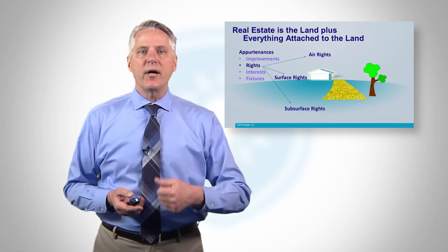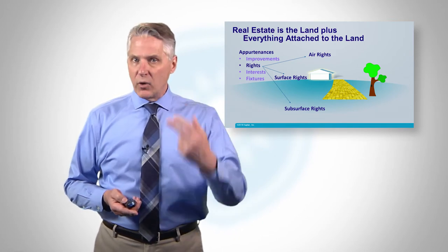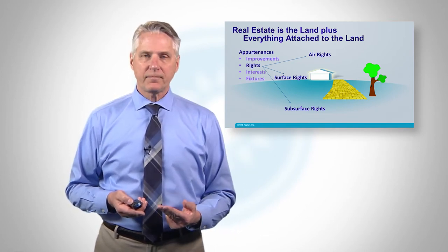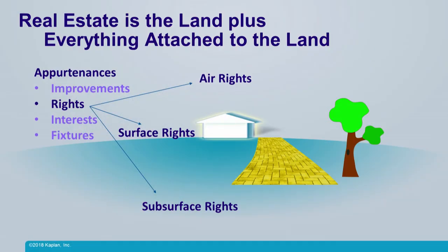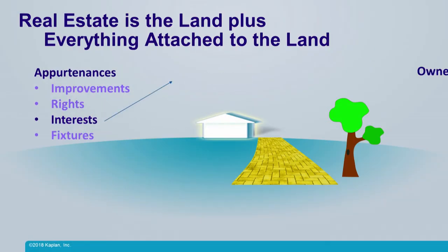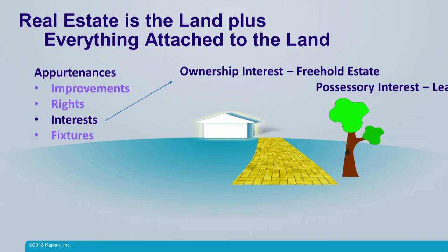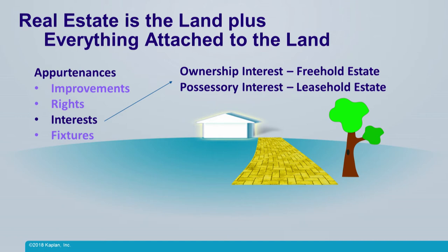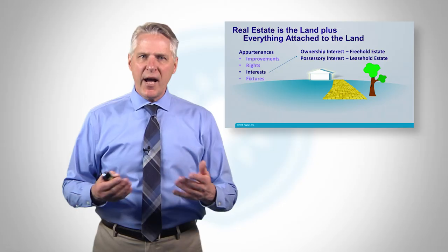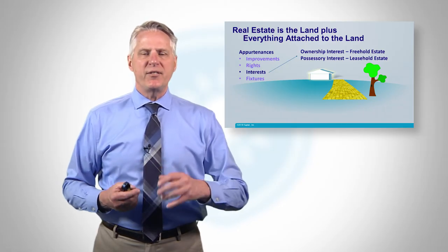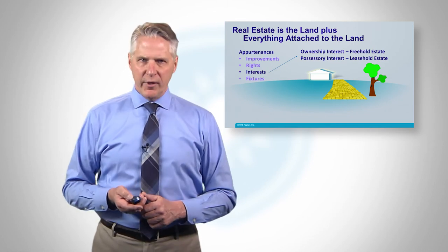So real estate is the land plus improvements plus the rights that go along with the real estate. Interest is very simple. Interest really means an ownership interest or a possessory interest, like a leaseholder tenant. So if you own real estate or if you're a tenant in real estate, then you have an interest in that real estate — either an ownership interest, which we call a freehold interest, or leasehold. Your interest in real estate is that you're an owner or you're a renter of real estate.